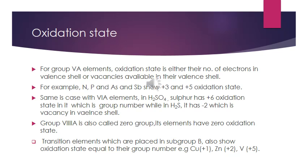Group 8A elements we call noble gases, and this group we call the zero group, because these elements have an oxidation state of zero. Transition elements, placed in subgroup B, also have oxidation states equal to their group number — for example, copper +1, zinc +2, and vanadium +5.